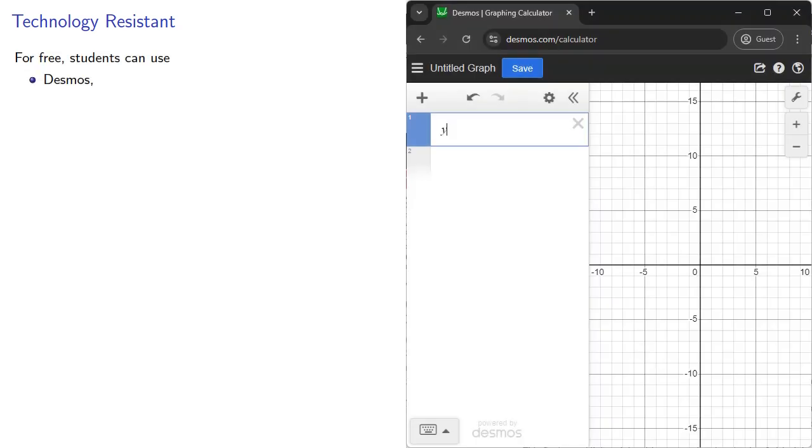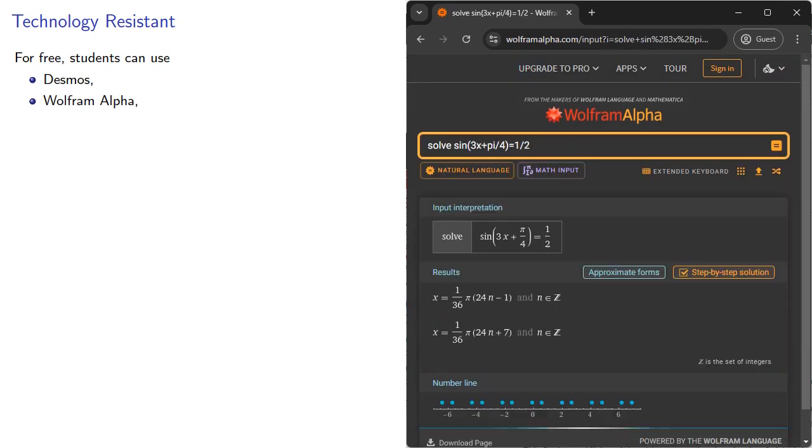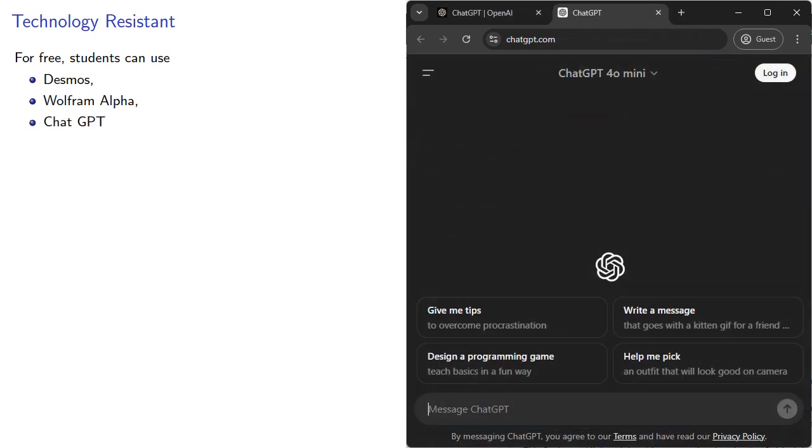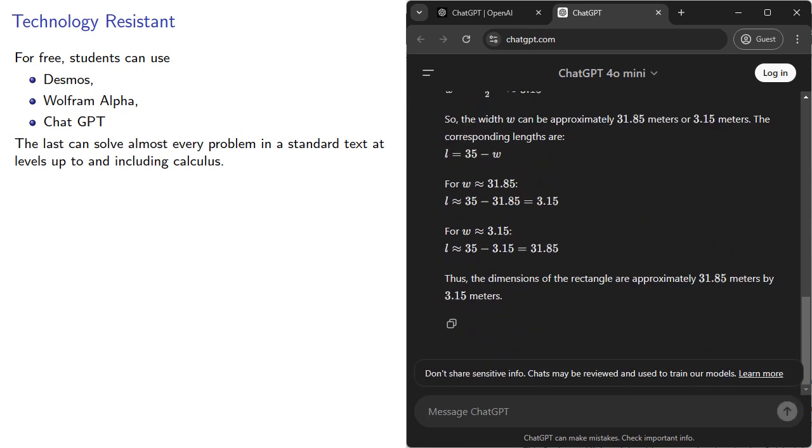But why pay for these things? For free, students can use Desmos as a graphing calculator, Wolfram Alpha as a computer algebra system, and ChatGPT, which can solve almost every problem in a standard text at levels up to and including calculus. And their capabilities are evolving rapidly.